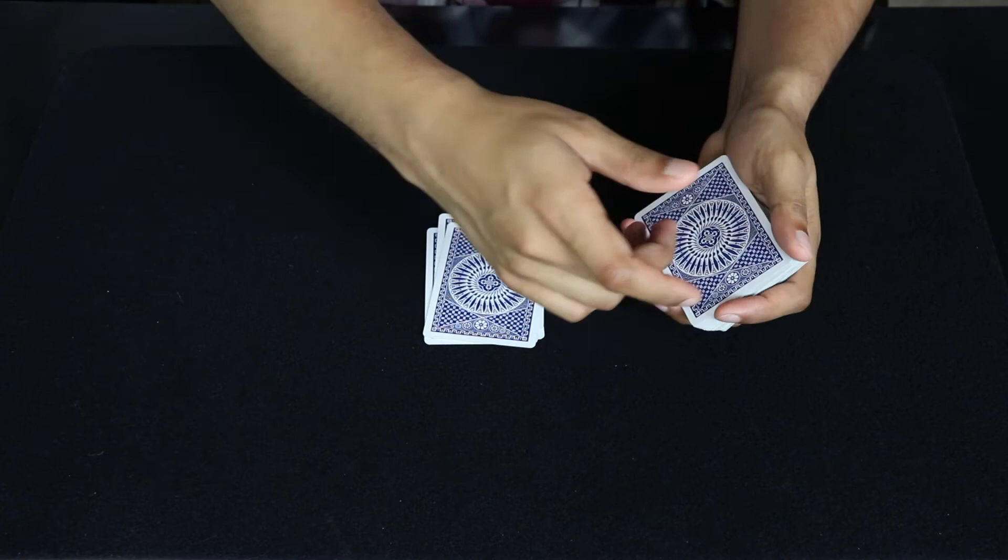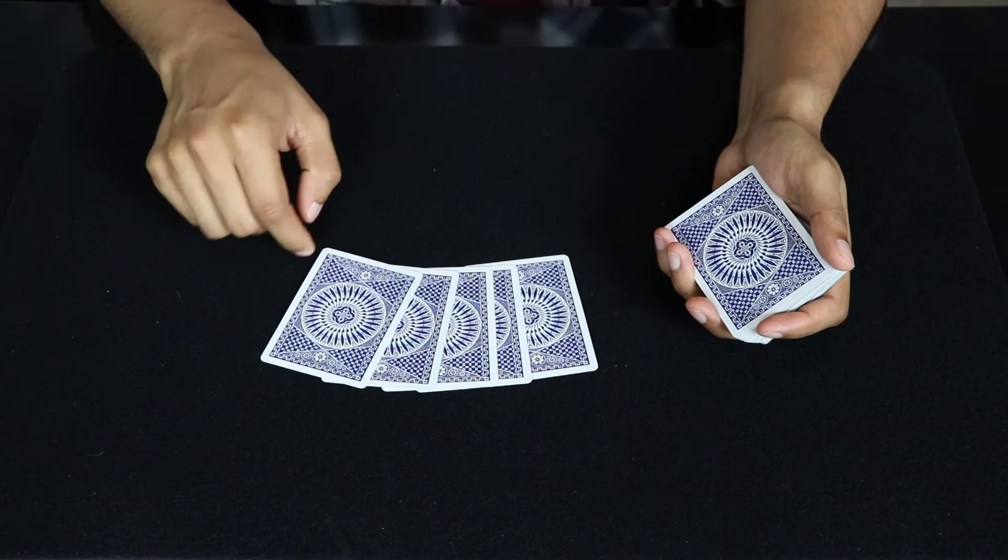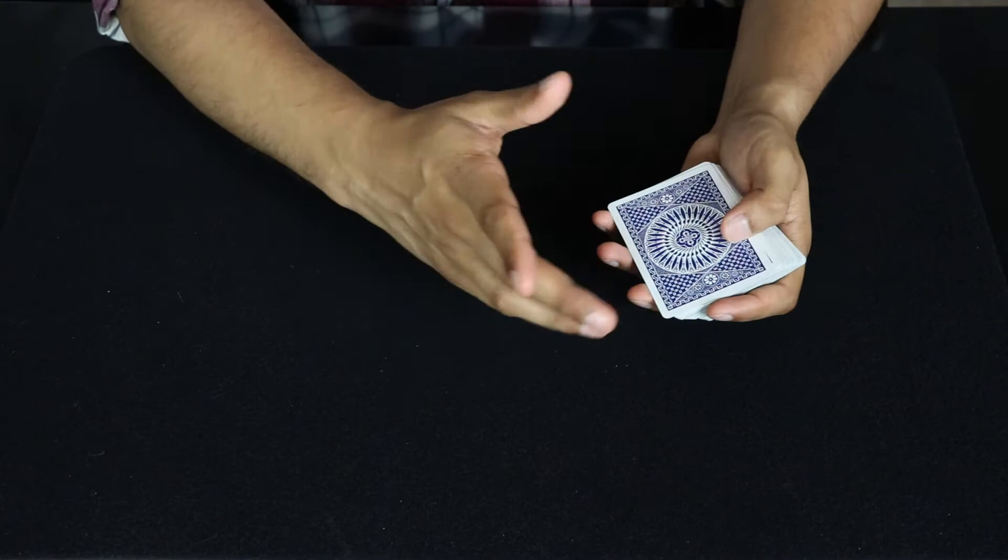So then you ask the Spectator, take the card, put it right here. Okay, and now here we have five cards. So when we take this back and automatically put it here, if you count one, two, three, four, five, the fifth card is going to be the Spectator's card.